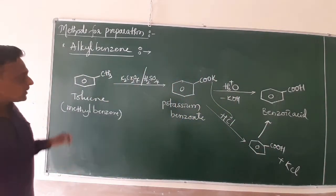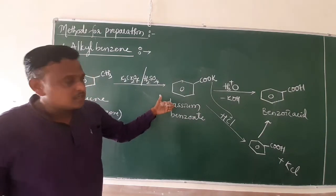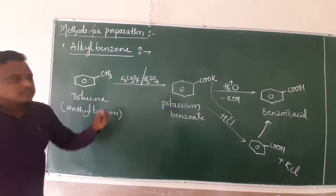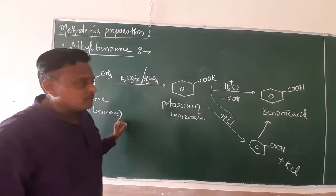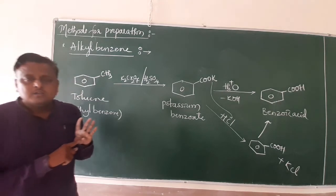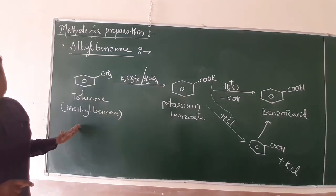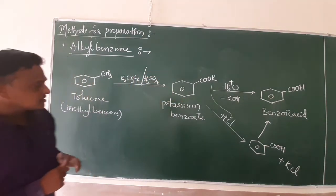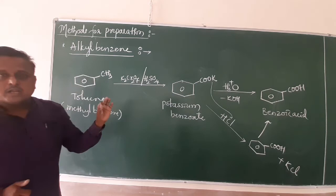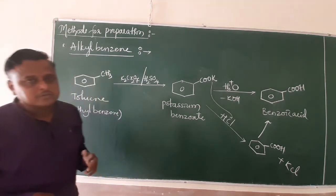Aromatic carboxylic acids are also prepared using alkylbenzenes. When toluene undergoes oxidation, it forms a salt, which is then neutralized with an acid to form the corresponding carboxylic acid — benzoic acid. In summary, this video covered three concepts: preparation of carboxylic acid from alcohol via oxidation, from aldehydes via oxidation, and from toluene or alkylbenzenes via oxidation followed by hydrolysis to form aromatic acids. Keep practicing these three reactions, and in the next video we will continue with the remaining preparation methods. Thank you.